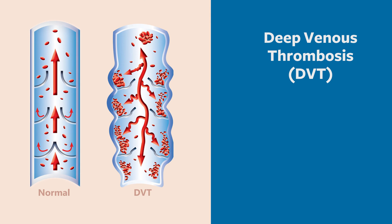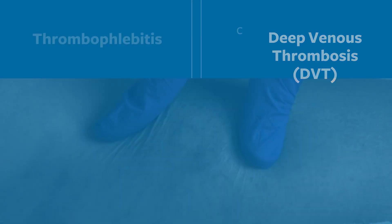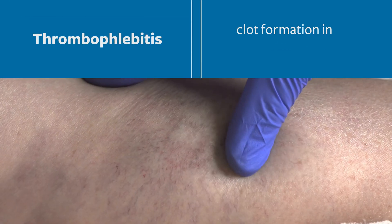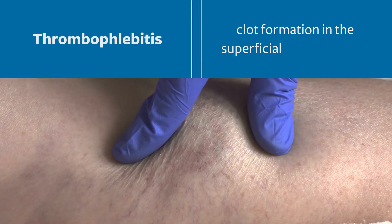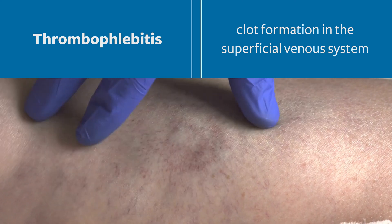DVT is an abbreviation for deep venous thrombosis and is commonly referred to as clot formation in the lower, or sometimes upper, extremities deep venous system. It should be differentiated from thrombophlebitis, or clot formation in the superficial venous system, which is generally a more benign condition.